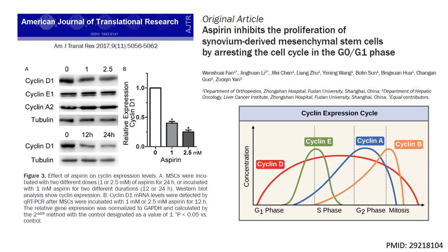To confirm this finding, the authors looked at the expression level of cyclin enzymes, which are critical to the process of cell division. What they found was that with increasing concentrations of aspirin, both protein as well as gene expression levels of cyclin D decreased. Cyclin D is important to the cell cycle process because high levels are required for a cell to leave the G1 phase of growth and enter the S phase where DNA is actively synthesized in preparation for cell division.